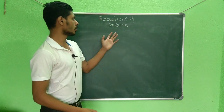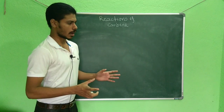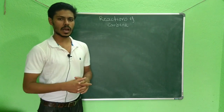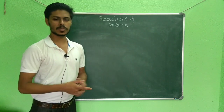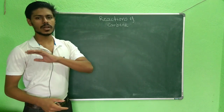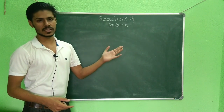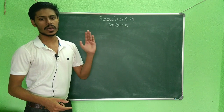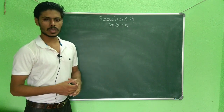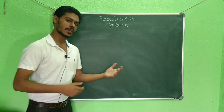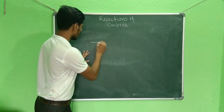Today we will talk about the reactions of carbene. Previously I mentioned that carbenes are very reactive species and they can be inserted into any bonds like C–C pi bonds, C–H sigma bonds, and O–H sigma bonds. Specifically we are talking about C–C pi bonds.